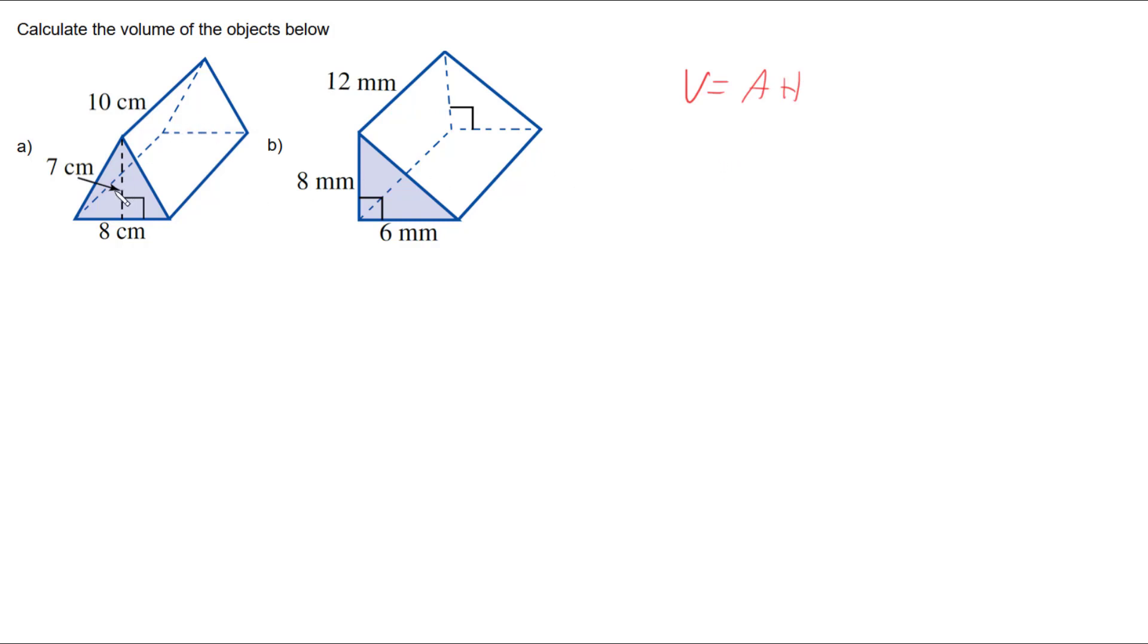So if I look at my first one, the area is this triangle at the front here that I want to look at. So our area, which for a triangle is base times height divided by two, and I'm just looking at this triangle which has a base of eight centimeters and a perpendicular height of seven centimeters. So I'm going to have a base of eight times height of seven divided by two. And working that out gives us a base area of twenty-eight centimeters squared.